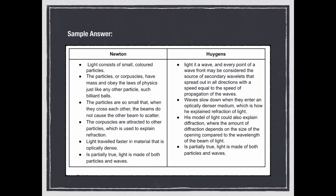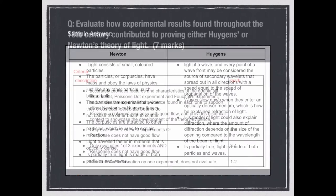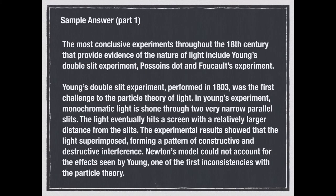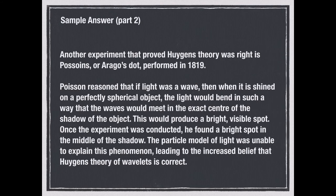As the previous question was a compare question, it was relatively easy and only required recalling information. This next question requires the ability to apply the content learned to properly answer the question. Evaluate how experimental results found throughout the 18th century contributed to proving either Huygens' or Newton's theory of light, which is seven marks. The full answer is shown on the screen and the main points to include are describing the features and characteristics of each experiment, indicating how the experimental results either challenged or worked with each theory and providing a final evaluation at the end of the answer, indicating which theory was accepted.